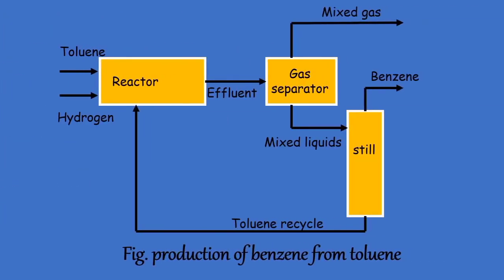The figure shows the production of benzene from toluene. The production of benzene is the unit process, and the various operations carried out in the reactor, gas separator, and still are called unit operations.